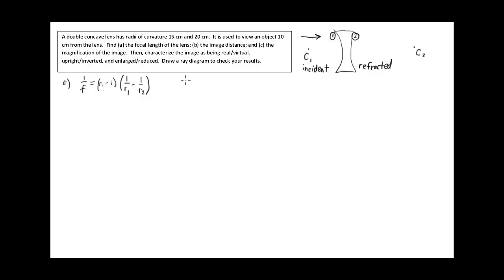The sign convention tells us: if the center of curvature is on the incident side, then the radius of curvature is negative. Since side 1 is more curved, r1 is the one that's 15 centimeters, and because center C1 is on the incident side, it's negative. r2, by contrast, has the larger value of 20 centimeters, and because the center is on the right-hand side, it has a positive sign: r2 = +20 cm. The problem didn't give an index of refraction, so we'll assume n = 1.50, typical for glass and most plastics.